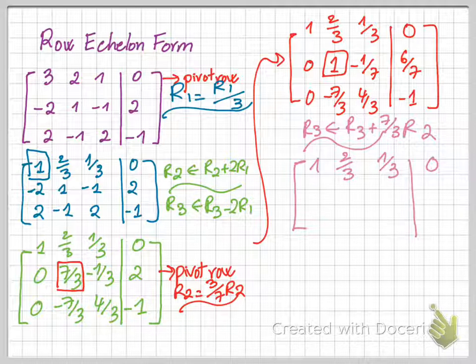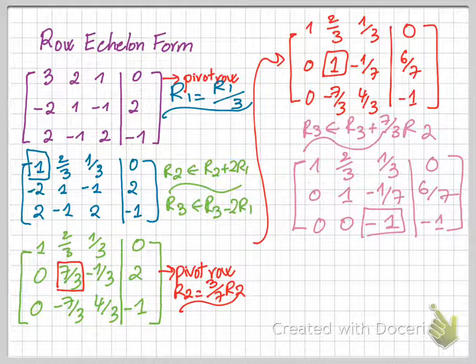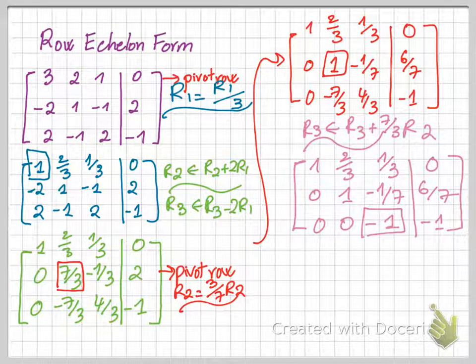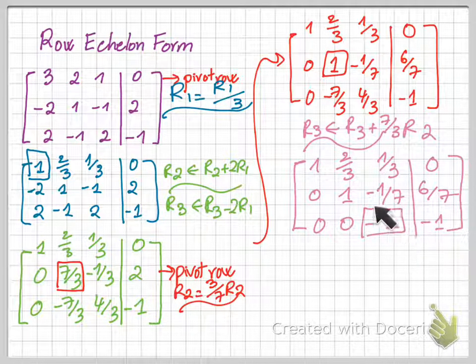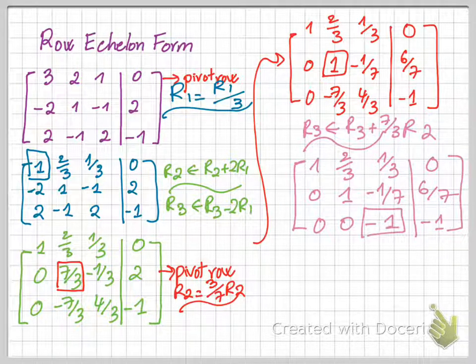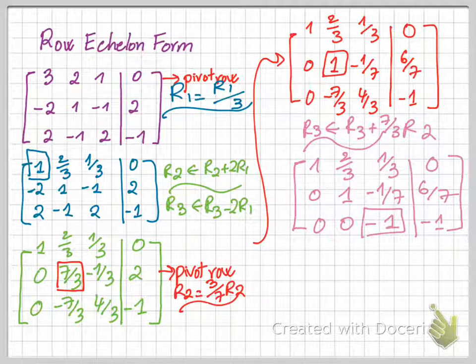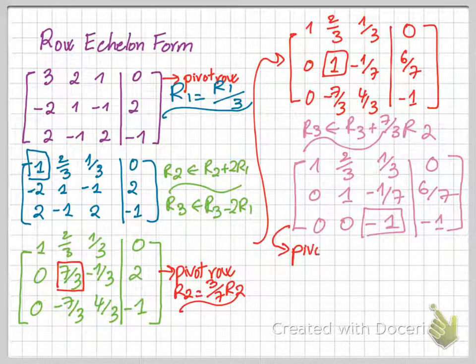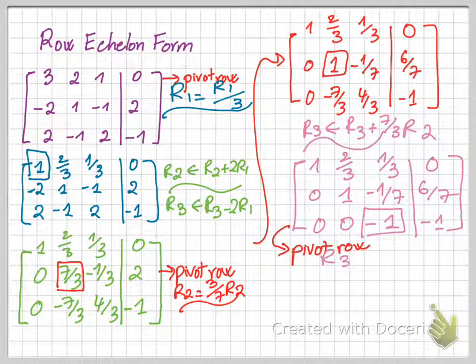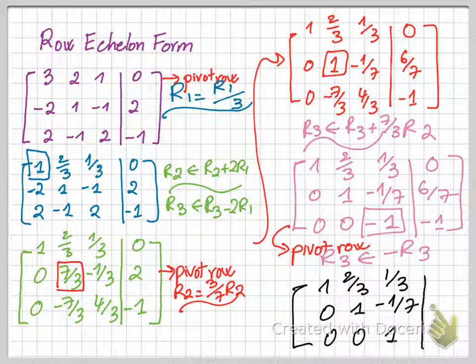And the new matrix after this operation is almost in the row echelon form except the entry here. So now the third row becomes the pivot row, so then you need to make sure that the leading coefficient is 1, but it's not 1. So we have to do another operation, which is you're gonna multiply row 3 by negative 1.